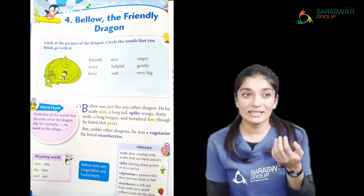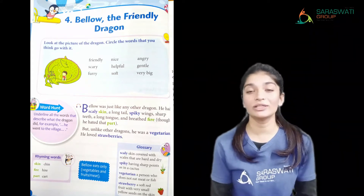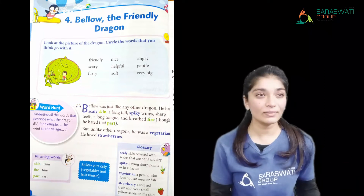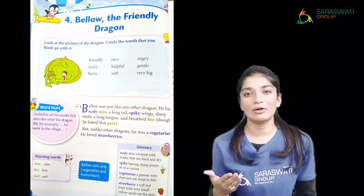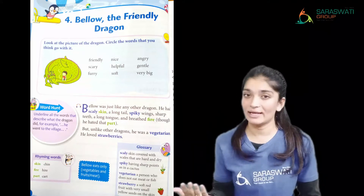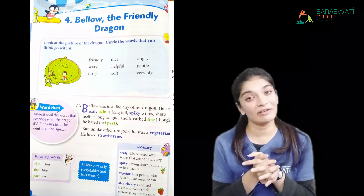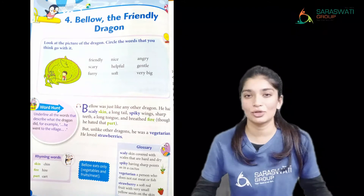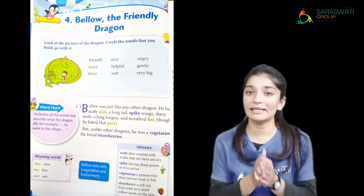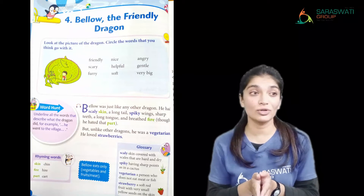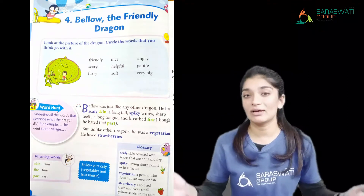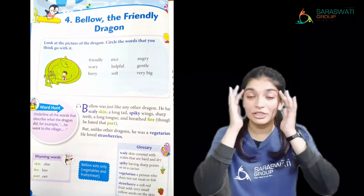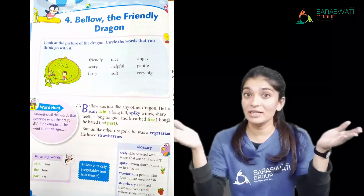So in this session we are going to start with a new chapter — 'Bello the Friendly Dragon.' Now hearing the word 'Bello the Friendly Dragon,' we think of dragons from stories and movies — they are always bad characters, always scary, always harming the public. We have not seen a dragon who is friendly.